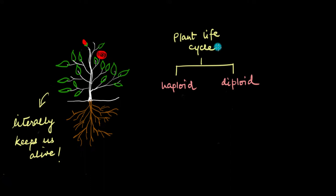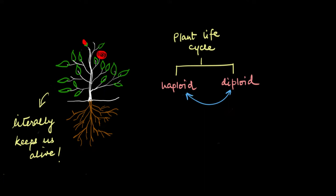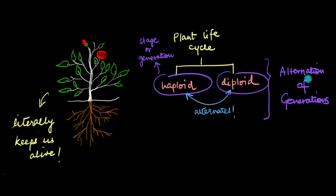A plant's life cycle consists of two prominent multicellular stages or generations: a haploid generation and a diploid generation. Every plant alternates between these two generations, meaning a part of their lives is haploid and then diploid. This is why this phenomenon is called the alternation of generations.